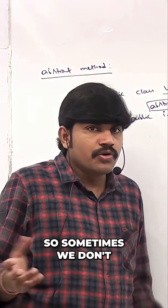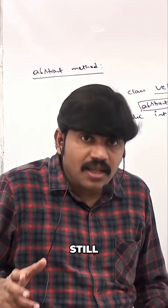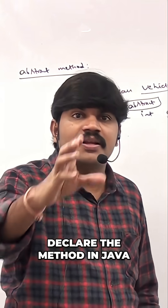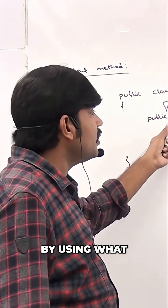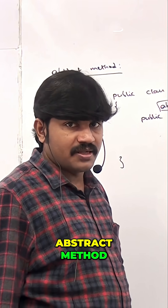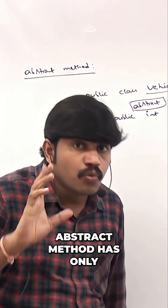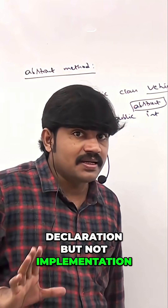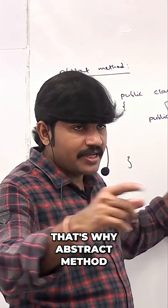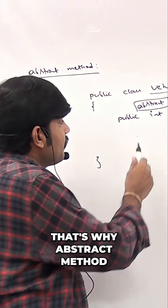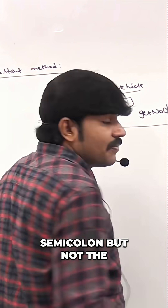Sometimes we don't know about implementation. Is it possible to declare a method in Java? Yes, it is possible by using an abstract method. An abstract method has only a declaration but not an implementation. That's why an abstract method declaration ends with a semicolon.